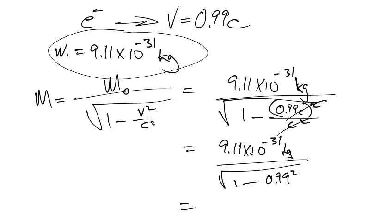1, enter 0.99 squared minus square root. And that number, we shall now divide into 9.11 EE 31 negative divided by. And our answer is going to be 6.46 times 10 to the power of negative 30 kilograms.